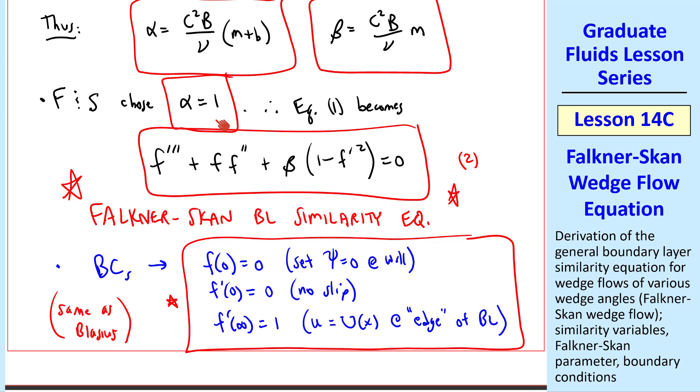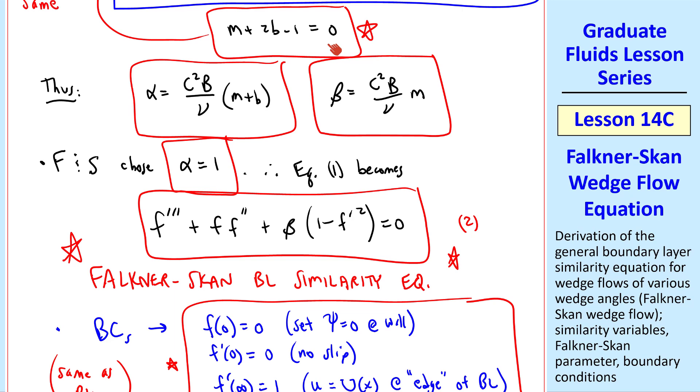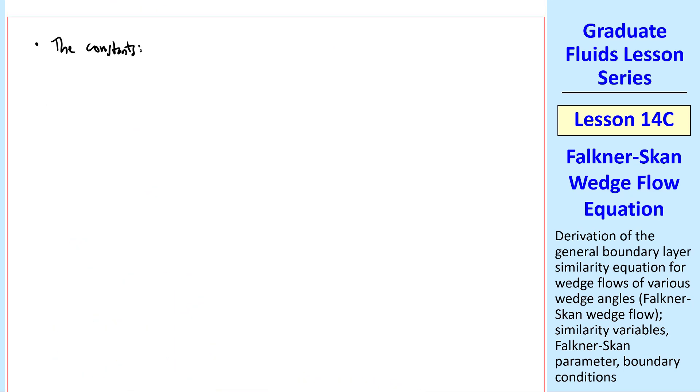Forcing alpha equal 1 puts some additional constraints on the problem. And this equation also is a constraint. So let's manipulate the constants a little. From our equation for m and b, b must be 1 minus m over 2.